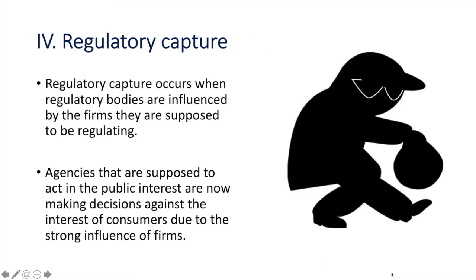Fourth is regulatory capture. Regulatory capture occurs when regulatory bodies are influenced by the firms they are supposed to be regulating. This may be through the pressure of lobbyists and politicians or the regulator themselves. As a result, agencies that are supposed to act in the public interest are now making decisions against the interest of consumers due to the strong influence of those firms.